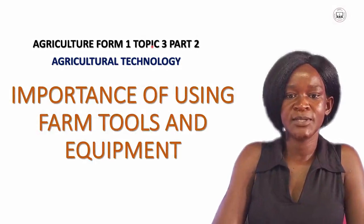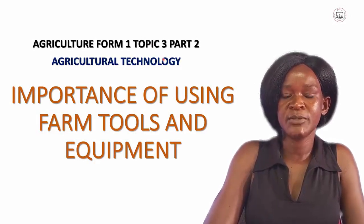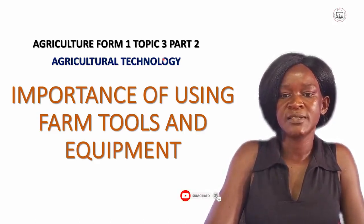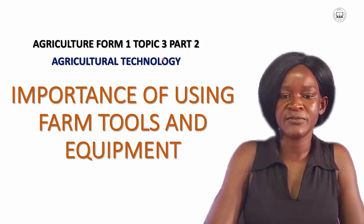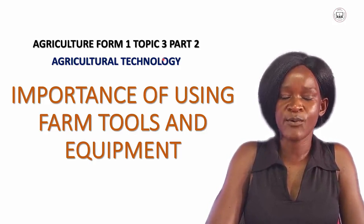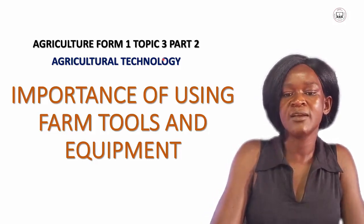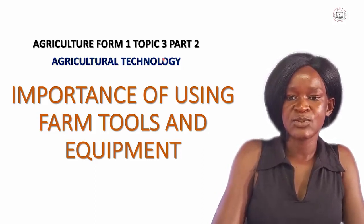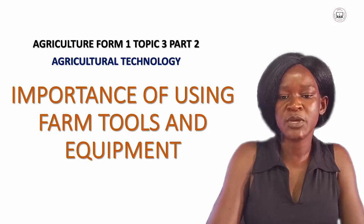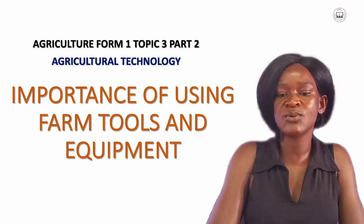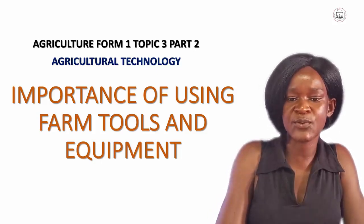Welcome back to Agriculture Form 1. We're still on Topic 3, which is Agricultural Technology. We were discussing farm structures and the types of farm structures, categorized into five. We are on category number four, which is farm tools and equipments. We are proceeding from where we stopped to discuss the importance of farm tools and equipments and categorize them further into five.